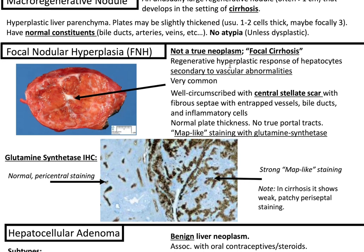Focal nodular hyperplasia. This is not a true neoplasm, and it looks — from gross picture as well as microscopically — like focal cirrhosis. This is a regenerative hyperplastic response of hepatocytes secondary to vascular abnormalities. It's very common, and grossly you'll see a well-circumscribed mass with central stellate scar with fibroseptae, entrapped vessels, bile ducts, and inflammatory cells. There will be normal plate thickness and no true portal tracts. With glutamine synthetase staining, it will have this characteristic map-like or geographic staining — as opposed to normal pericentral staining — while cirrhosis shows weak, patchy, periseptal staining.